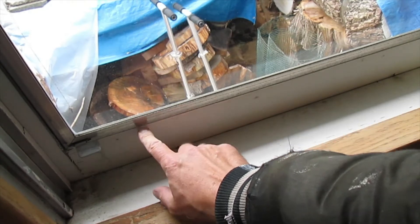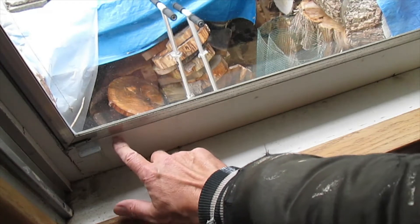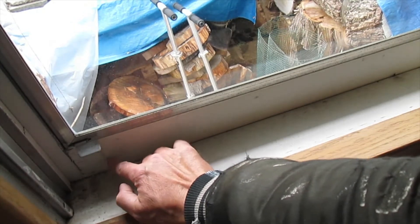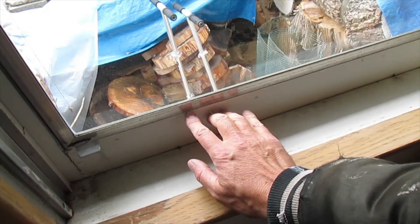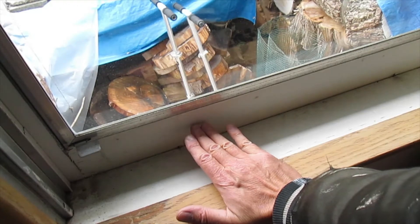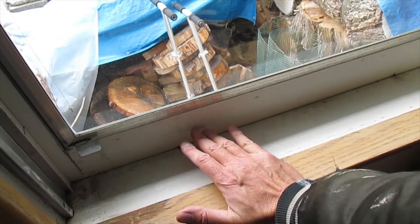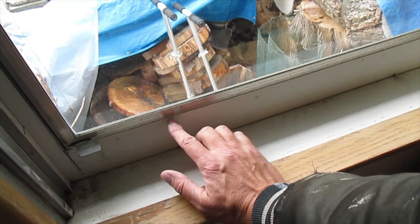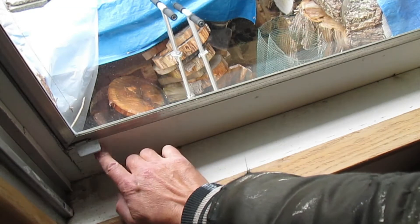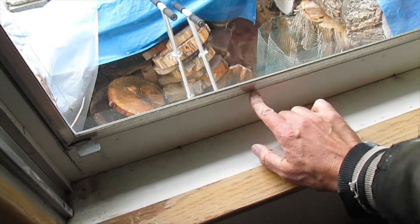This is the storm window in my kitchen window. Somebody years ago had cut out the wooden part of the storm window down here and they had an air conditioner in here. When I moved in the air conditioner was gone, so I cut out a piece of wood to fill this in.